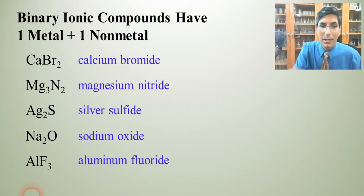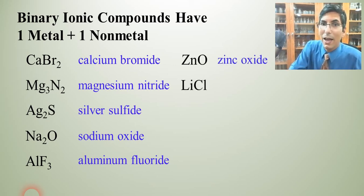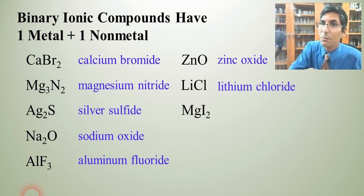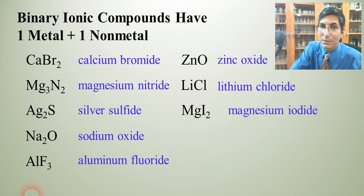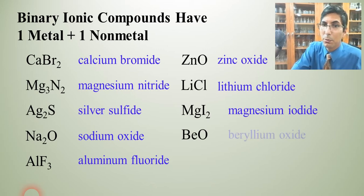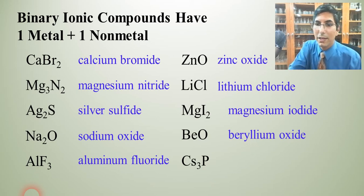Those are the very simple binary ionic compounds. We can do some more practice here. ZnO is going to be zinc oxide. We have lithium chloride. MgI2 is just magnesium iodide. BeO is beryllium oxide. And Cs3P is cesium phosphide.